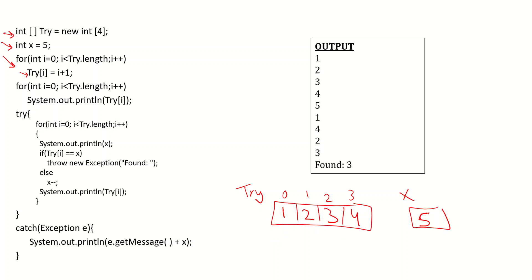Then we have another for loop that goes from 0 to the end of the array and outputs the element at each location i. So we output element 1, 2, 3, and 4. These four numbers in the output represent the elements in the array.